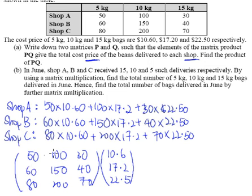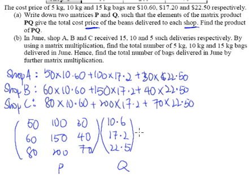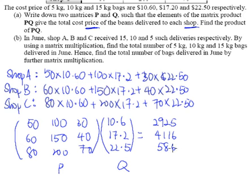So this is our P and this is our Q. We label our answer properly: this is P and this is Q. Now all we have to do is work it out. This is a 3 by 3 matrix multiplied by a 3 by 1, so our answer will be a 3 by 1 matrix — three rows, one column. The answer is 2,925; 4,116; and 5,863. Shop A received $2,925 worth of beans.